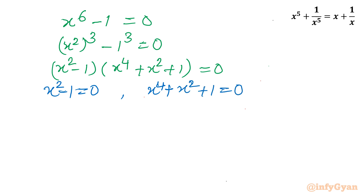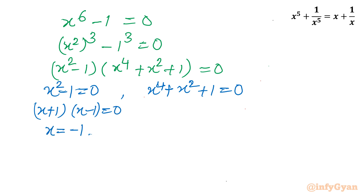If x square minus 1 equal to 0, I will use the difference of two squares again: (x plus 1)(x minus 1) equal to 0, so x will be equal to minus 1 and plus 1.